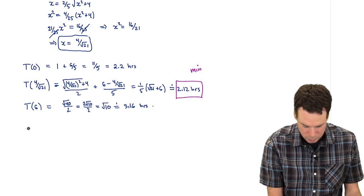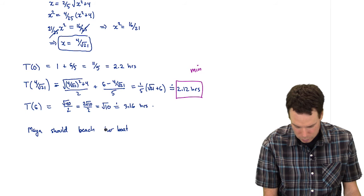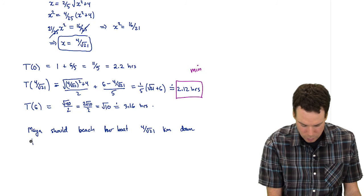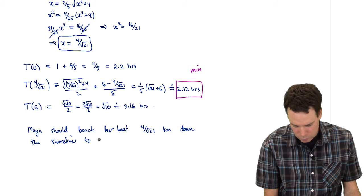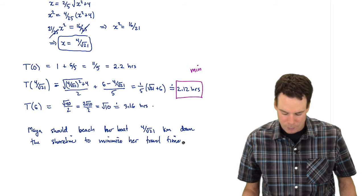And so we have Maya should beach her boat 4 over root 21 kilometers down the shoreline to minimize her travel time. So to get to the village in the least amount of time. That's where she should beach her boat.